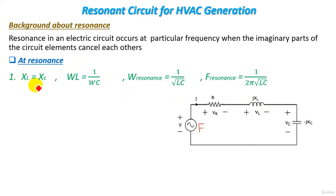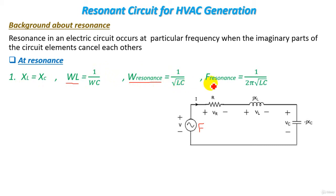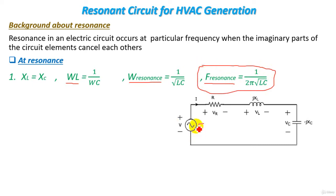The reactance of the inductor equals the reactance of the capacitor, so ωL equals 1 over ωC, where ωL is the reactance of the inductor and 1/ωC is the reactance of the capacitor. From this equation, we get ωR, the angular frequency at which resonance occurs. If the supply frequency equals this resonance frequency, which is 1 over 2π√(LC), resonance will occur.